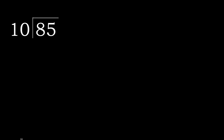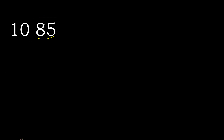85 divided by 10. 8 is less, therefore next. 85 is not less, therefore with 85: 10 multiplied by which number is nearest to 85 but not greater? 10 multiplied by 9 is greater. 10 multiplied by 8 is 80, which is not greater.